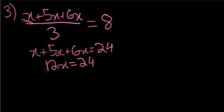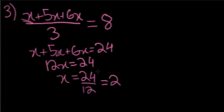Then we divide both sides by 12. x equals 24 over 12, which equals 2. That's choice B.